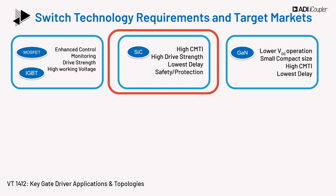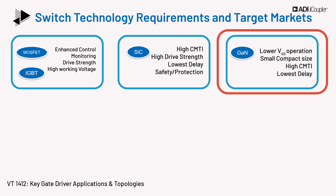Overcurrent protection schemes for SiC devices are also different from IGBTs. The requirements for driving a GaN switch aren't too dissimilar to that of the SiC MOSFETs, except that the gate-to-source drive voltage requirement of GaN switches is generally lower than SiC switches. Due to the even faster switching of GaN, having a compact gate driver and drive layout is important for robust operation. High CMTI and low delay are essential for driving these switches too.